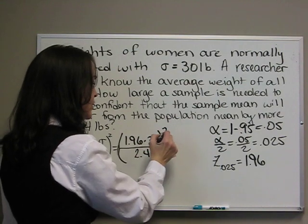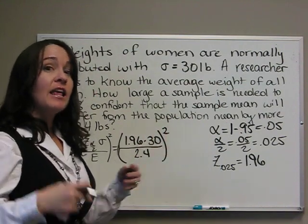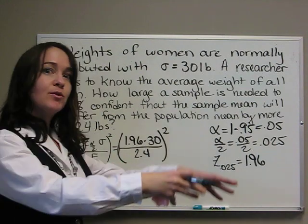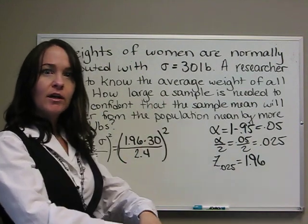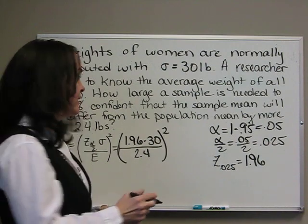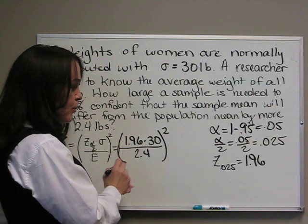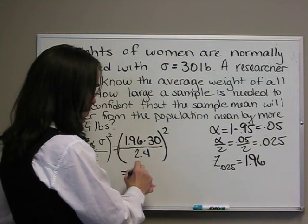And then we're going to square it. We multiply and divide, and then that answer will be squared. You need to keep going and don't round numbers until the very end. So 1.96 times 30 divided by 2.4